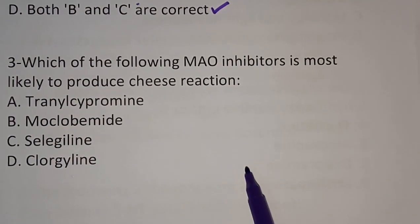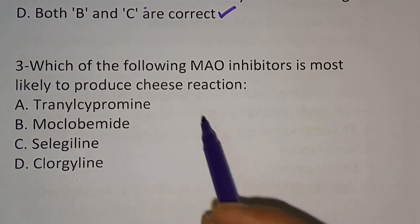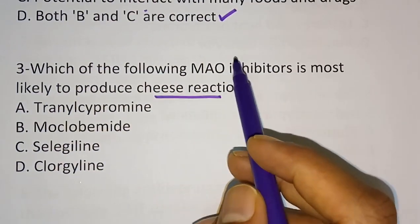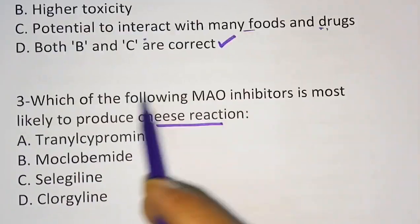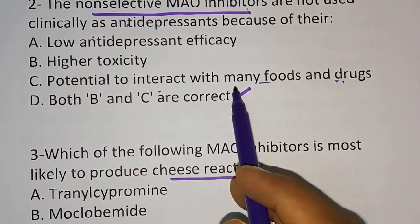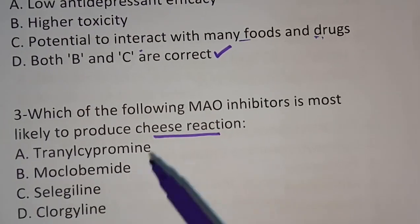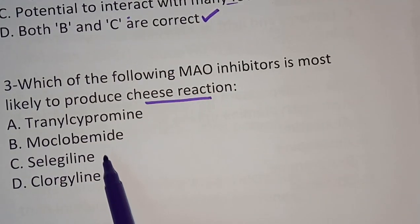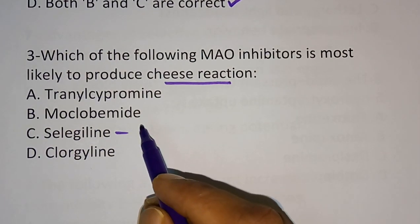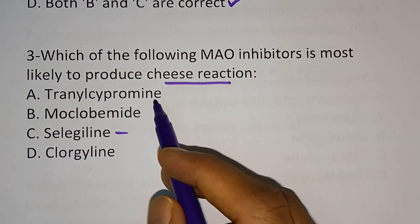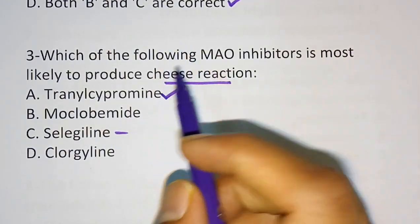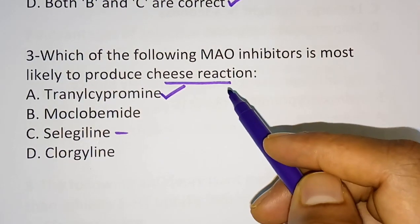Question number three: which of the following MAO inhibitors is most likely to produce cheese reaction? Options are Tranylcypromine, Moclobemide, Selegiline. Non-selective MAO inhibitors cause this food interaction more compared to selective ones. Selegiline is MAO-B inhibitor, Moclobemide is MAO-A inhibitor, and Tranylcypromine is a non-selective MAO inhibitor. So the correct answer is Tranylcypromine — non-selective MAO inhibitors produce cheese reaction more.